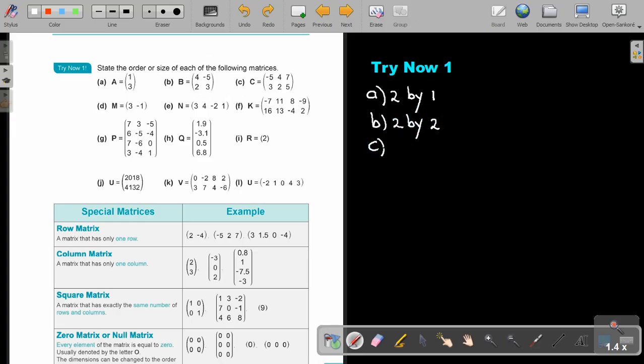Number C, I can actually write this one. It's two rows by and it's one, two, three columns. Number D, I'm going to use the multiplication now. So, it's one row multiply two columns.